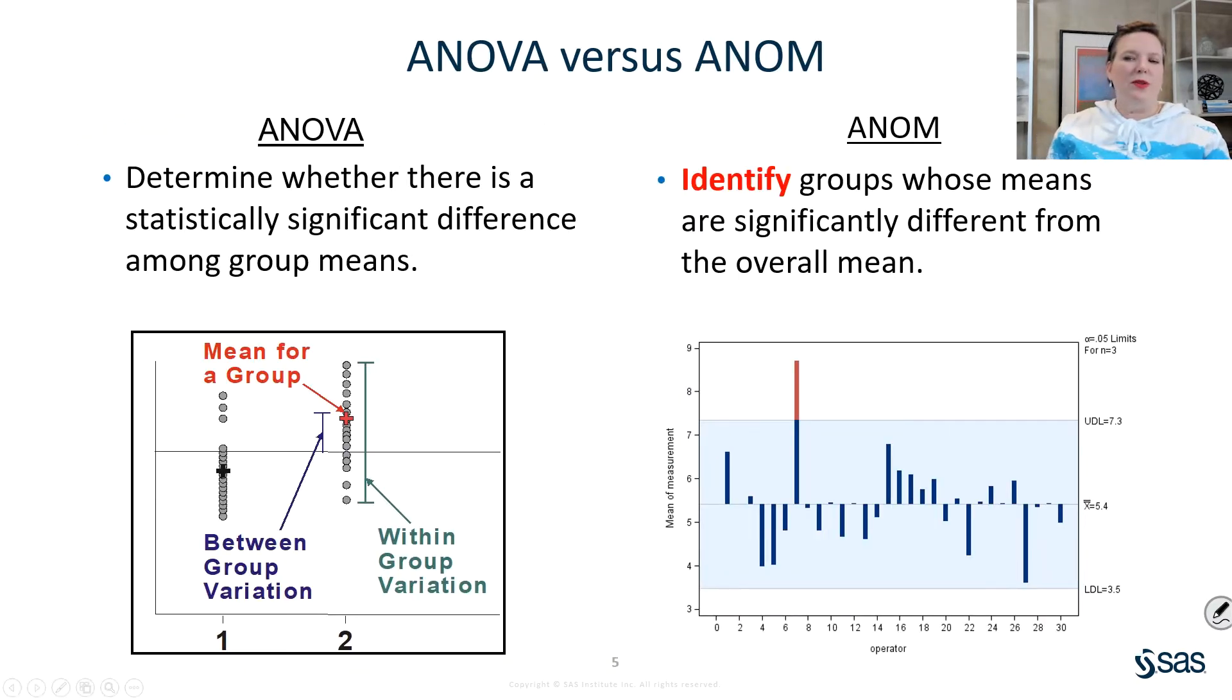First of all, what's the difference between ANOVA and analysis of means? Analysis of variance, or ANOVA, is used for testing whether there are statistically significant differences among group means. So if your ANOVA is significant, it tells you that there's at least one significant difference, but it doesn't tell you where the difference is. In order to find the difference, you then have to do planned comparisons or post-hoc comparisons or contrasts.